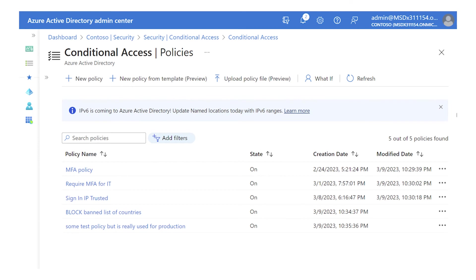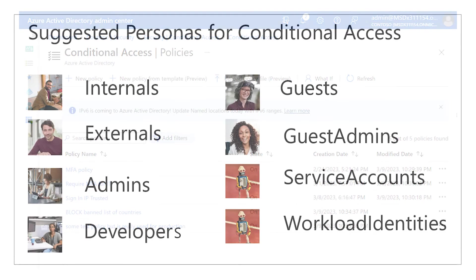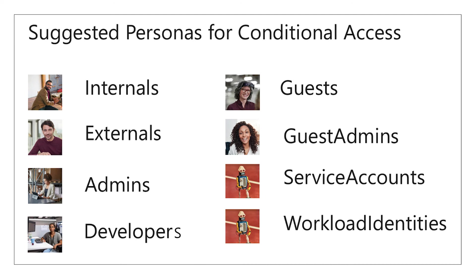When we go into customer tenants it might look something a little bit like this — there'll be a number of policies kind of scattered about. Folks have produced them because they need them, but there isn't an overarching governing architecture behind it. With the zero trust framework for conditional access, we work with customers to build that around the persona: internal staff, external consultants, developers, HR folks, finance folks, guests — all these different personas.